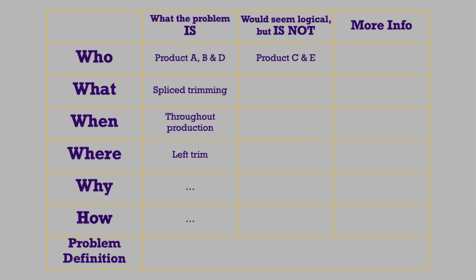It's very useful to combine this with another tool: the Is / Is-Not. For each of those questions, we want to explicitly state what it is that we saw, and also what we would have expected but is not the case. For instance, in a factory making steel plate where the trimming on the left side is really irregular — with the question 'who,' we ask which products does it happen with. We observed it in products A, B, and D, but not in product C and E. An expert on the line can then say, 'Those products are thicker than 10 millimeters, and C and E are thinner — could that be the reason?' So if you do this with all the questions, you specifically describe what you do see but also make explicit which expectations you had that were not confirmed, giving you a very complete picture.